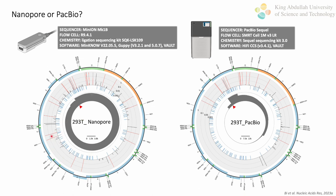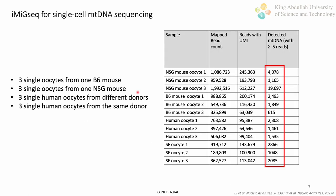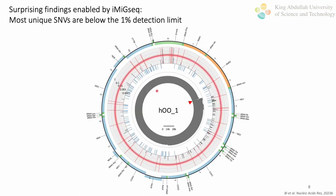Nonetheless, the mutational spectra and signatures were highly consistent between nanopore and PacBio data. We hypothesized that IMIC-seq could provide a quantitative understanding of the genetic heterogeneity of mtDNA in single oocytes. We sequenced 6 mouse and 6 human oocytes and obtained thousands of complete mitochondrial DNA per cell. Surprisingly, the vast majority of SMVs, which are these black bars, in human oocytes have a variant allele frequency below the 1% detection limit of conventional NGS methods, shown by this red line. This suggests that most variants are overlooked by conventional methods.